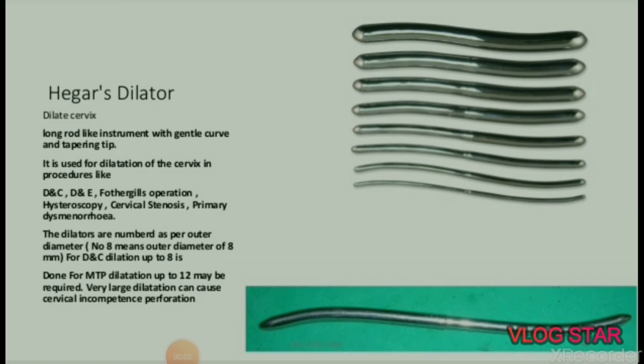Next is Hegar's dilator. It is used to dilate the cervix — a long rod-like instrument with a gentle curve and tapering tip. Used for dilatation of the cervix in procedures like D&C, D&E, Fothergill's operation, hysteroscopy, cervical stenosis, and primary dysmenorrhea. The dilators are numbered as per outer diameter.